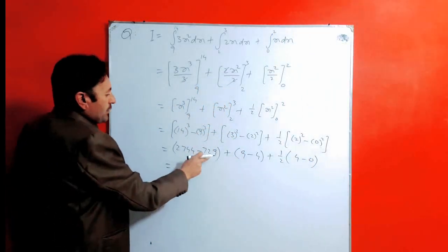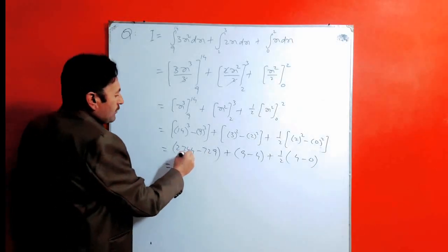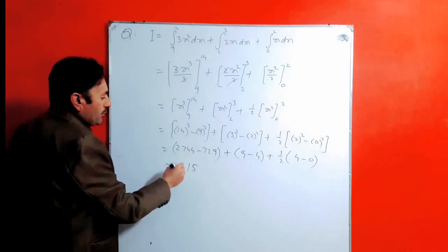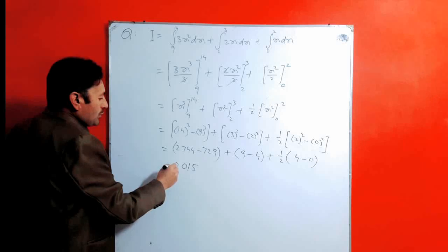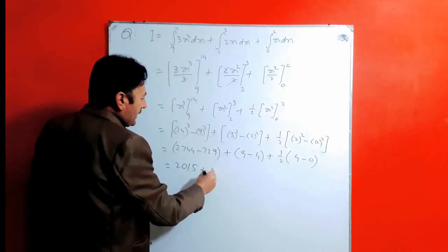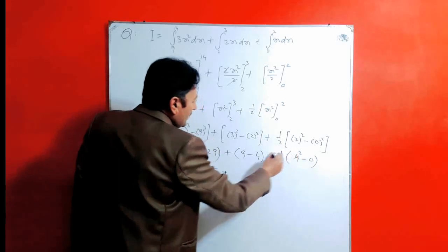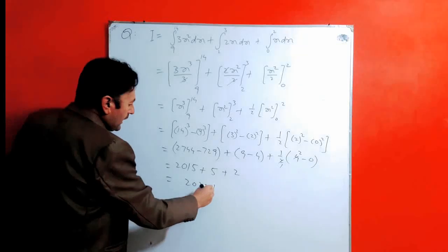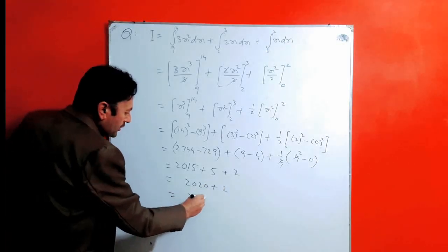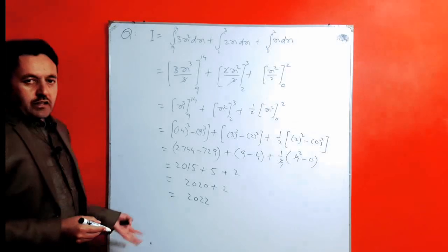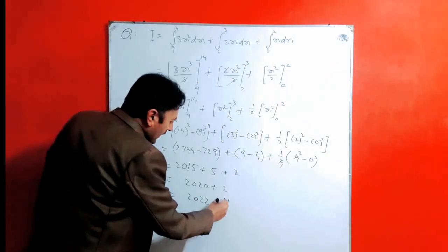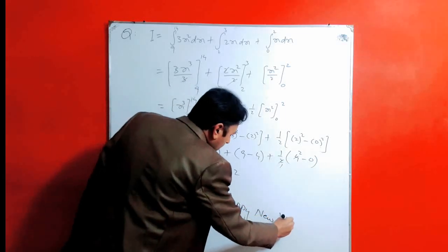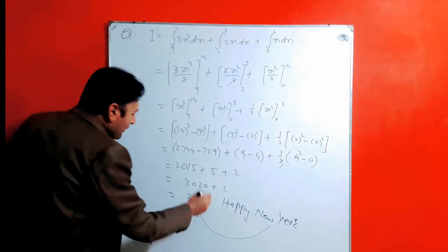Subtracting 729 from 2744, we get 2015. From 3 squared minus 2 squared we get 5. And 1 over 2 into 4 gives 2. So 2015 plus 5 is 2020, and plus 2, we get 2022. This is actually the new year 2022 — so happy new year 2022!